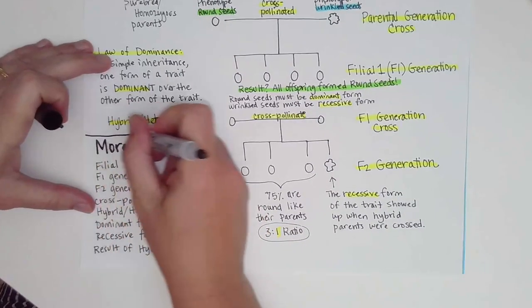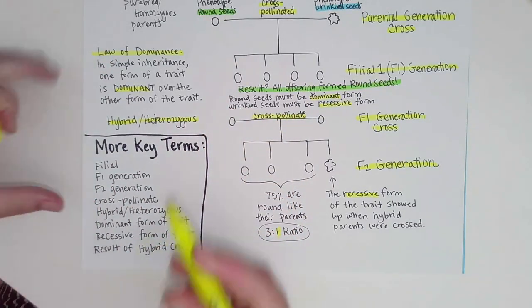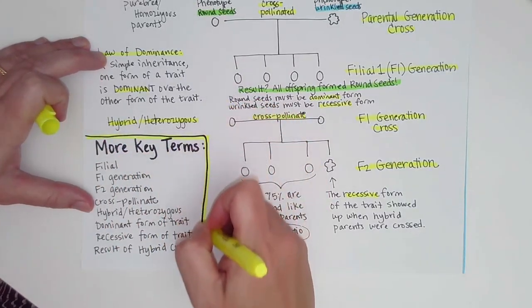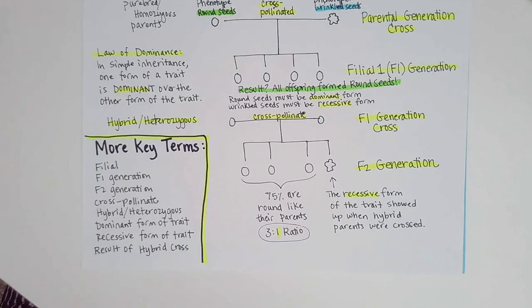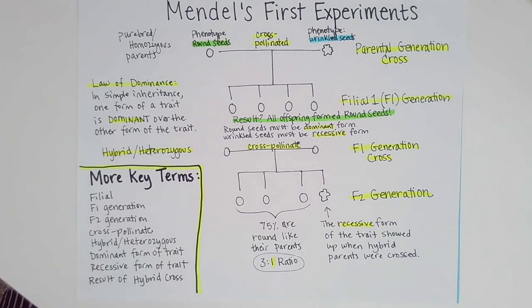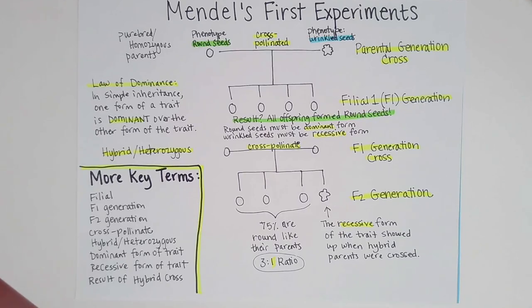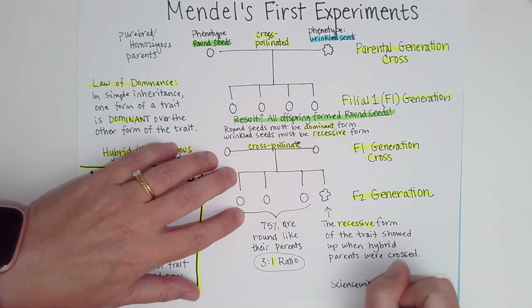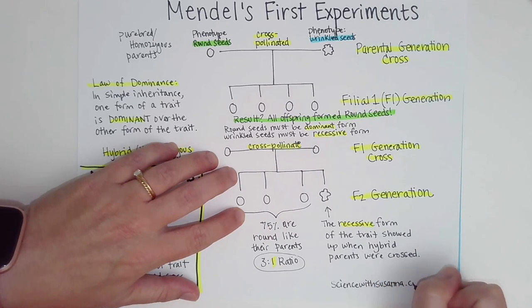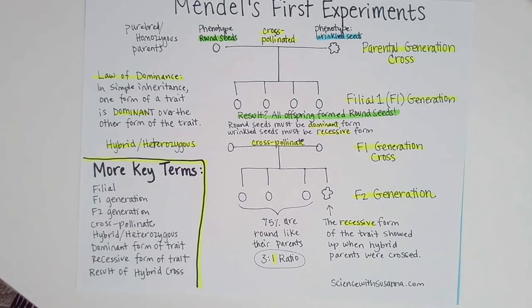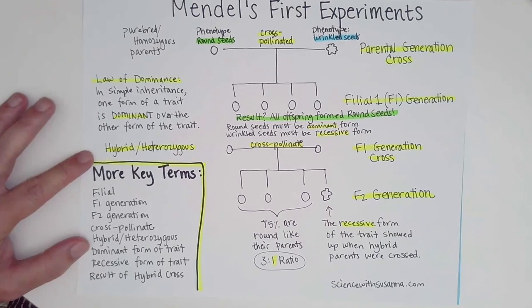I'm almost done wrapping up this video. Part two will cover Punnett squares and compare monohybrid and dihybrid crosses. Also, next Tuesday — June 2023 — I'll be doing a live webinar for Archer Review, helping students prepare for the TEAS, going through all of these basic genetics topics. You can find more of my resources at sciencewithsusanna.com, which is well organized with study materials and handouts available. See you in the next video.